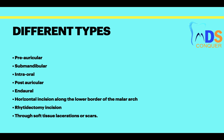Coming to approaches of the TMJ — different types include: pre-auricular, submandibular, intra-oral, post-auricular, endoral, horizontal incision along the lower border of the zygomatic arch, ritidectomy incision, and through soft tissue lacerations or scars.